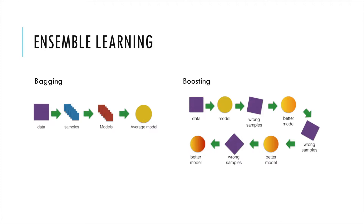The other one is called boosting. For the data, first we find the best model to train it, and then for the wrong samples we use another better model to train it. Using these techniques several times, at last we get a better model. So this is called boosting.